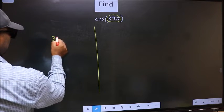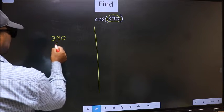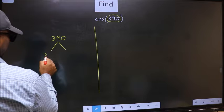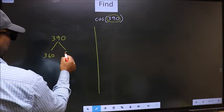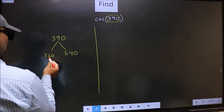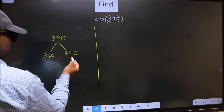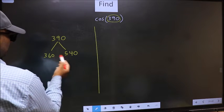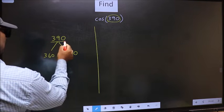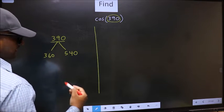390 lies between 360 and 540. This is 180×2 and 180×3. Between these two numbers, 390 lies.